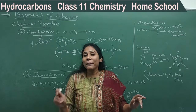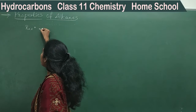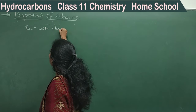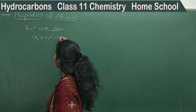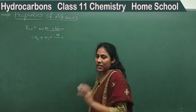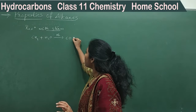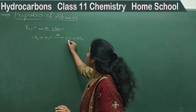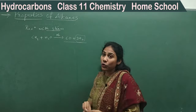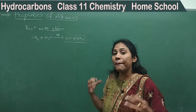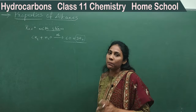Coming to the very simple reaction with steam: methane reacts with steam in the presence of nickel (Ni) as catalyst, and you get carbon monoxide (CO) and hydrogen gas (H2). This is one of the very important reactions because it is used to prepare hydrogen industrially. Whenever you want to prepare hydrogen in bulk, you use this reaction.